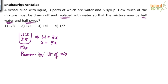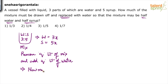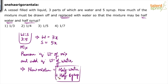So after that operation — remove q liters of mixture and add q liters of water — the new mixture will be equal to half water plus half syrup. Now this is key: you know that the final mixture is going to have half water and half syrup.